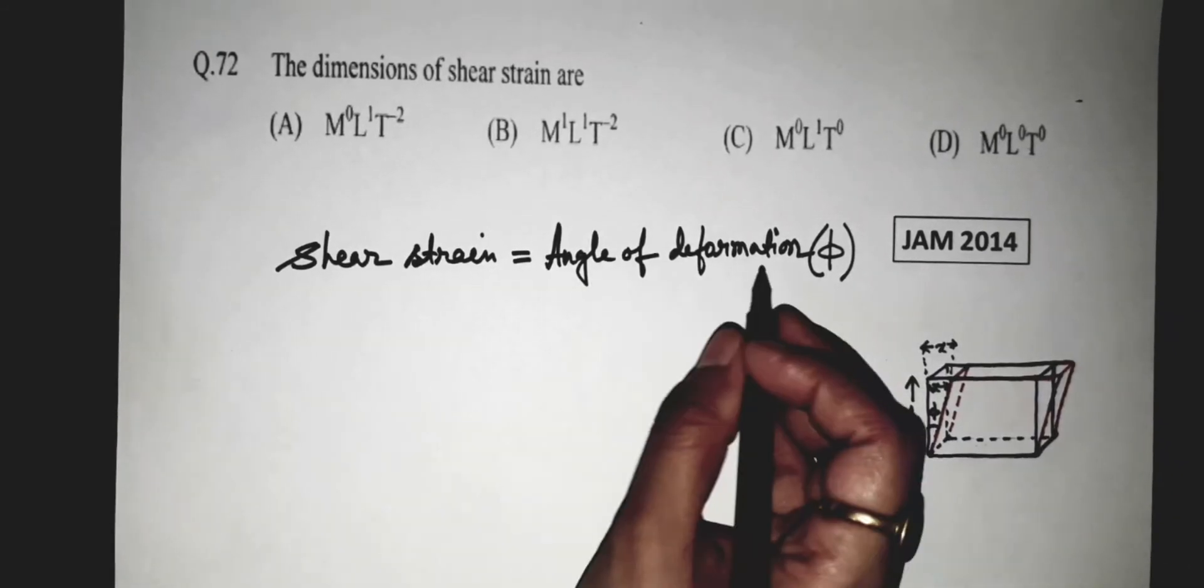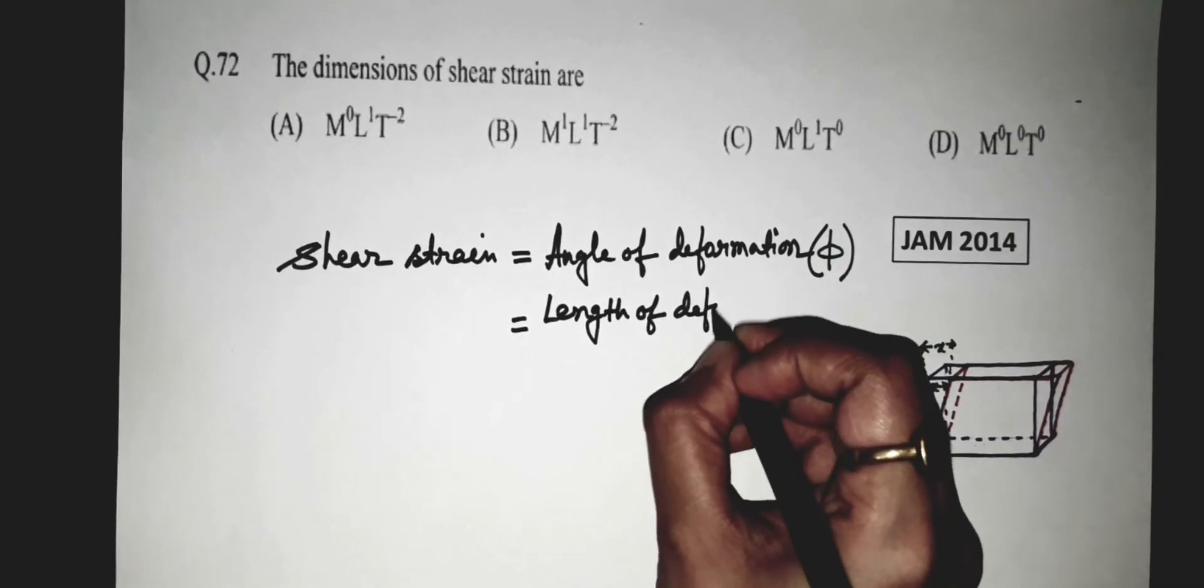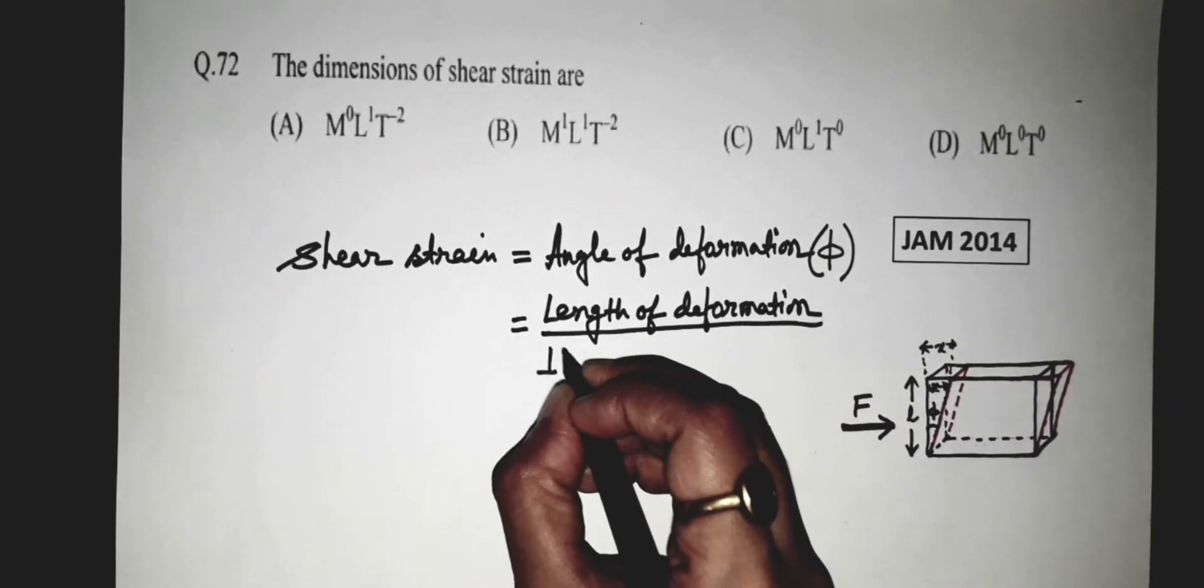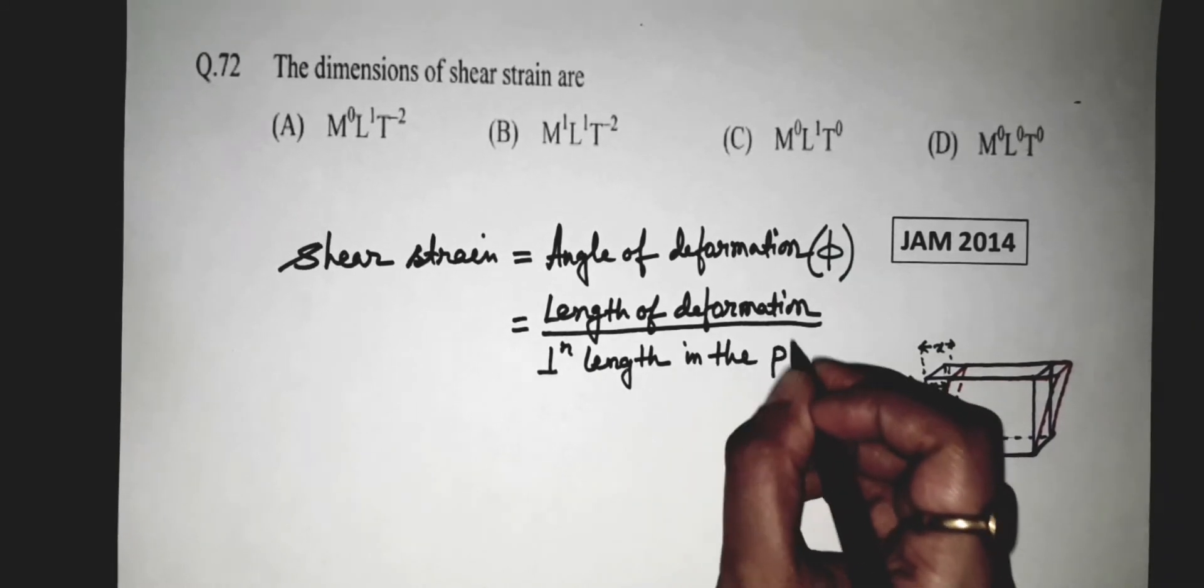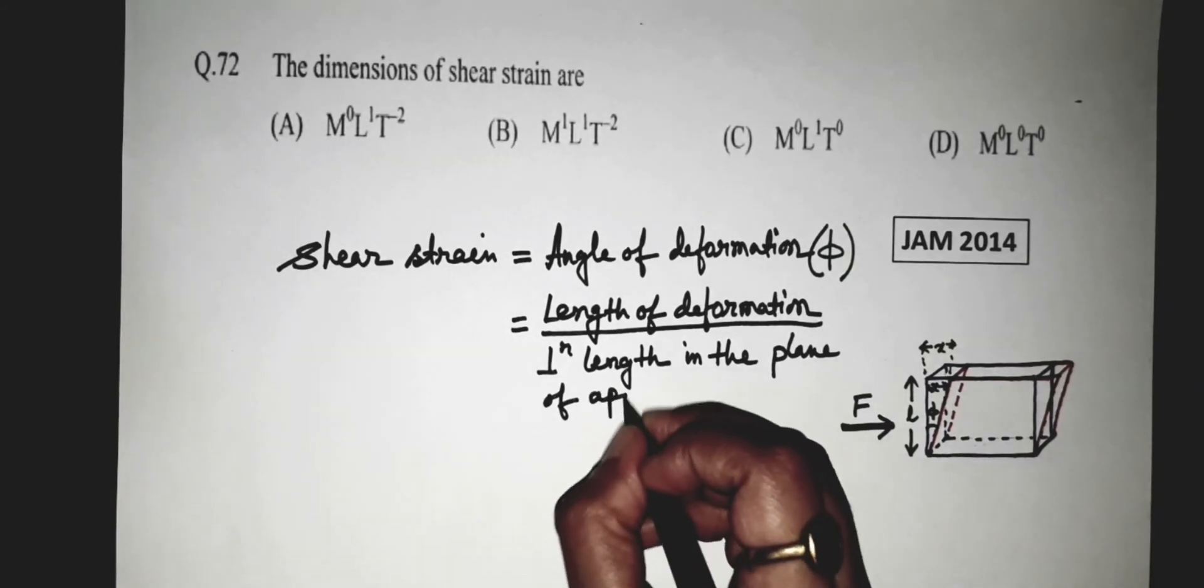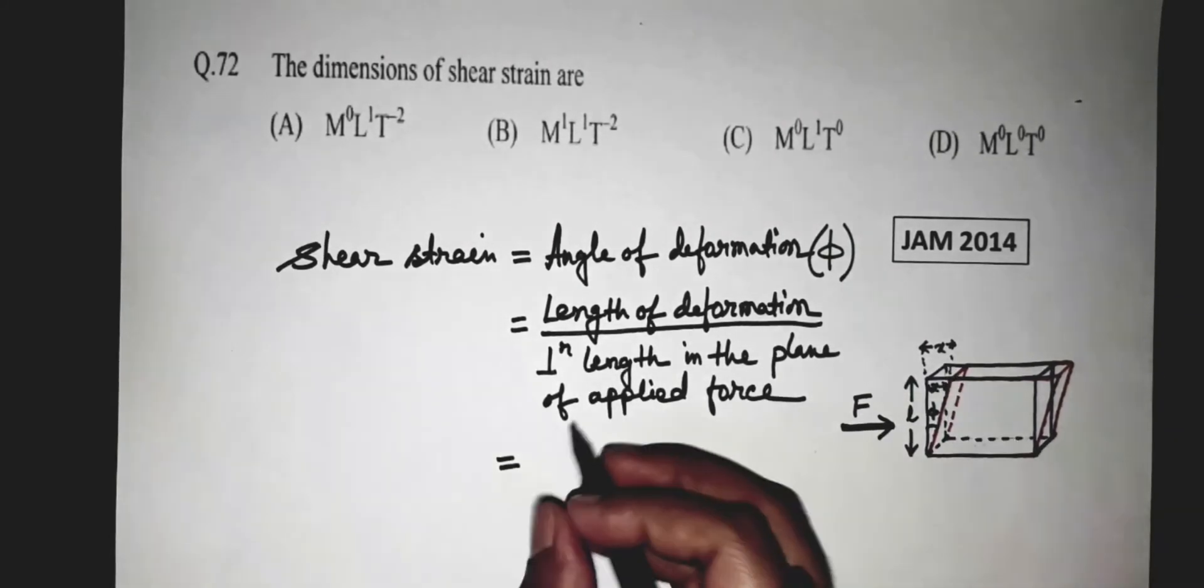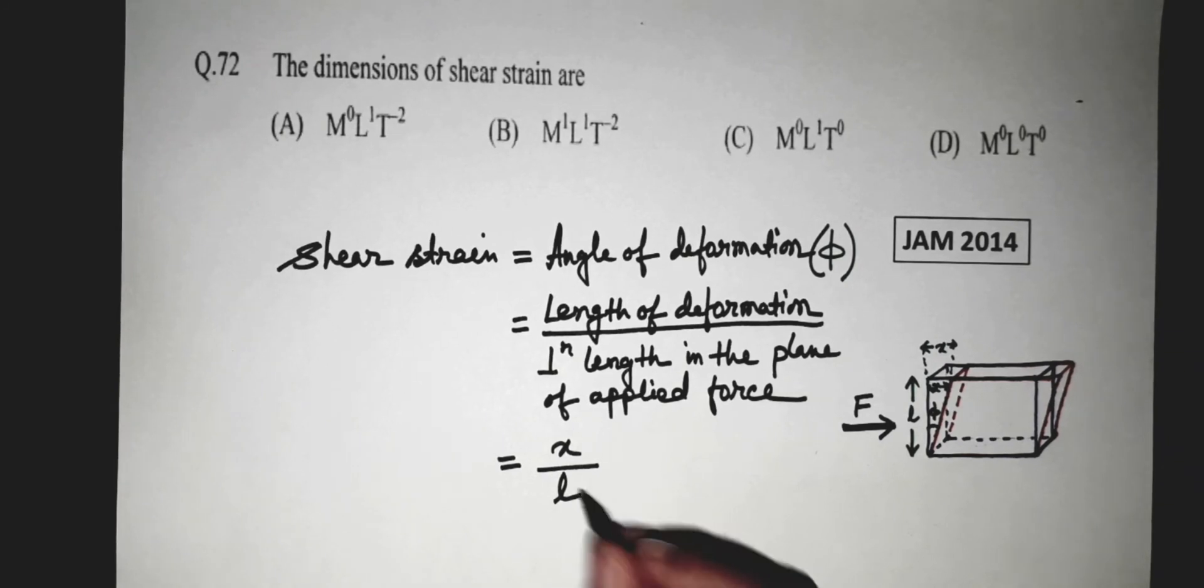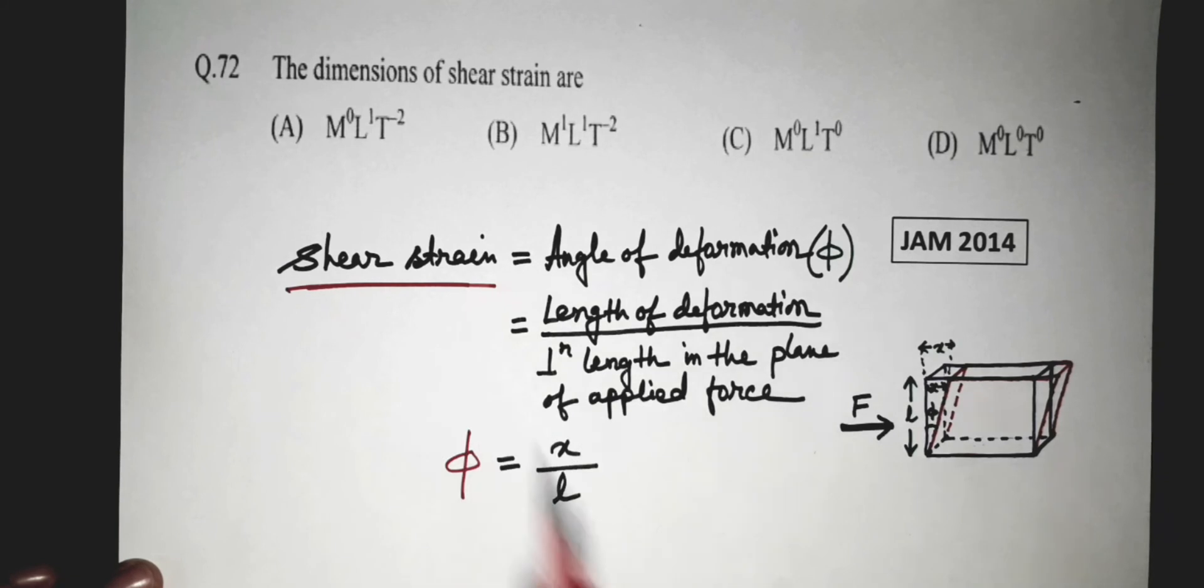And the angle of deformation is the ratio of length of deformation divided by the perpendicular length in the plane of applied force. That is equals to the length of deformation means X, divided by the perpendicular length to this plane of applied force is L. And this is phi. So phi is equals to X by L. This is shear strain.